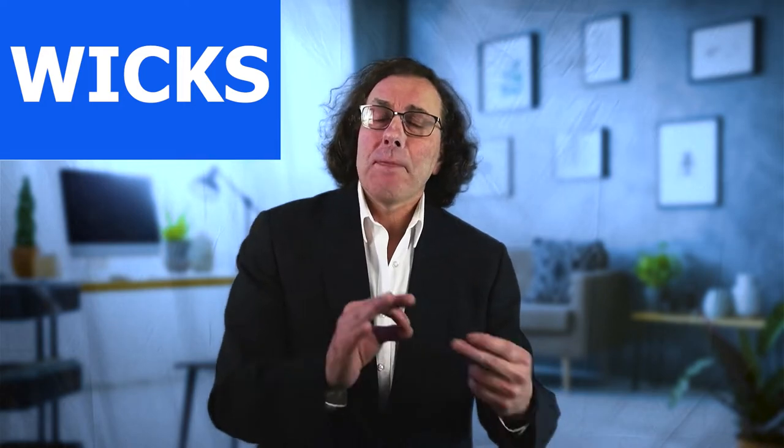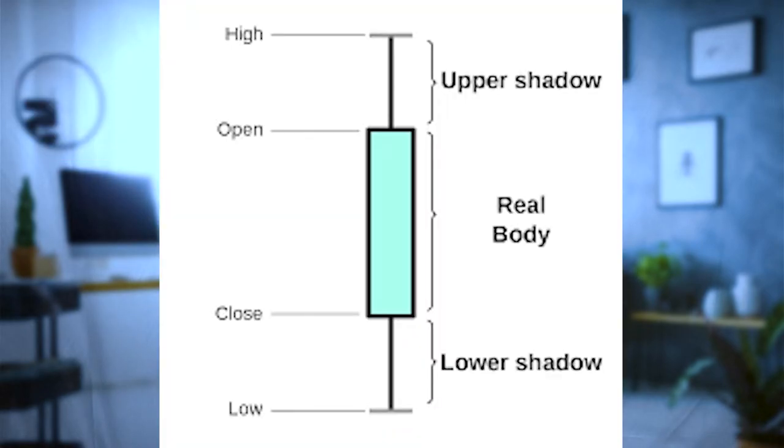First we're going to talk about the wick. The wick is the smaller line that is either on the top or the bottom of the body of the candle — the body being the wider, thicker part. Top wicks show selling pressure, while bottom wicks show buying pressure. When you see a group of candles with a lot of top wicks, it's a strong indication that the price may soon break downward, especially after an uptrend and at a strong point of resistance. A group of candles with bottom wicks indicates the price may soon break upward, especially after a downtrend or at a strong point of support. Wicks show a sign of rejection, a potential reversal, exhaustion, and buyers or sellers losing control over momentum.